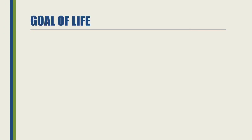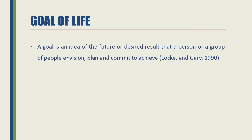The goal of life is an idea of the future or desired result that a person or a group of people envision, plan and commit to achieve — by Locke and Gary in 1990. People decide a goal of their future and desire to get a good result, then plan and commit to achieve their goals in life.